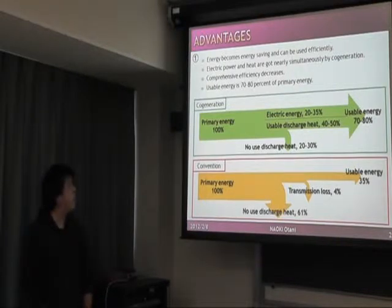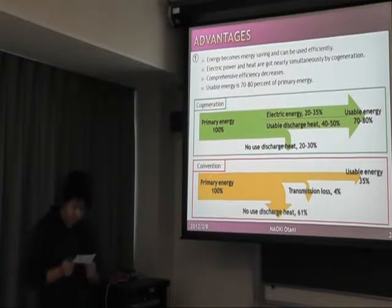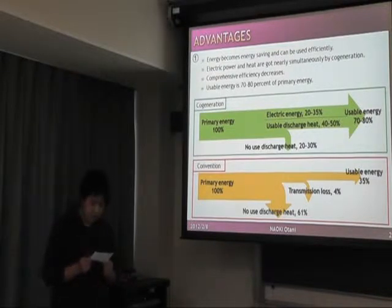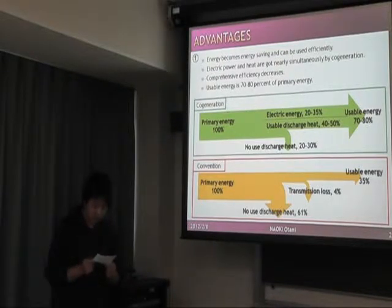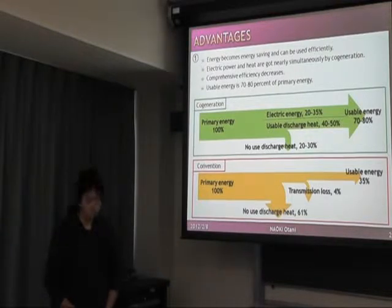Electric power and heat are both produced simultaneously by cogeneration, using 20 to 30% less primary energy.